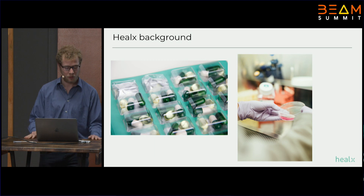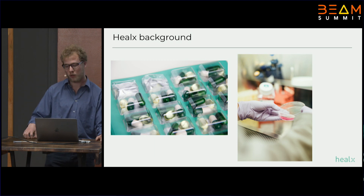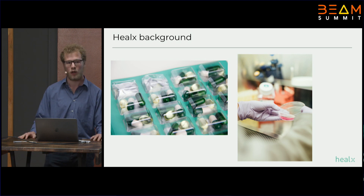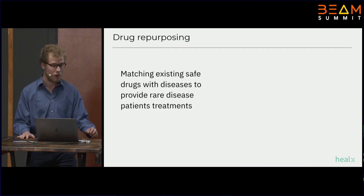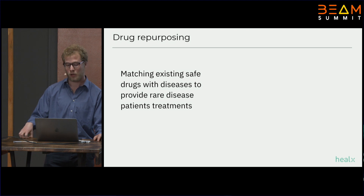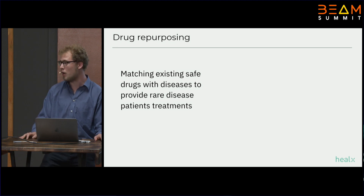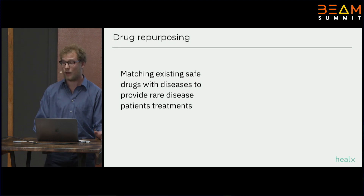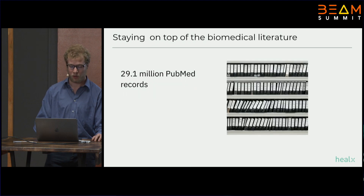Helax is a small pharma company and we work in drug repurposing. Our primary goal is to deliver 100 drug repurposing projects in the rare disease space by 2025, using machine learning to speed up the drug discovery process. We focus on drug repurposing, which has the benefit of you having already a safe drug that you're trying to match with a disease — mainly rare diseases, because traditionally rare diseases don't really have treatment.